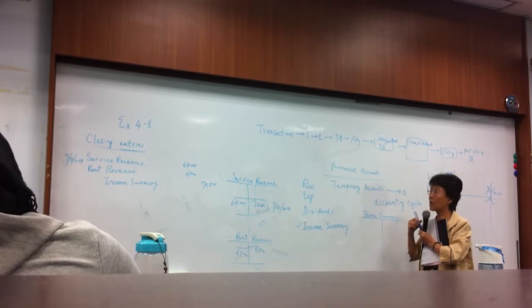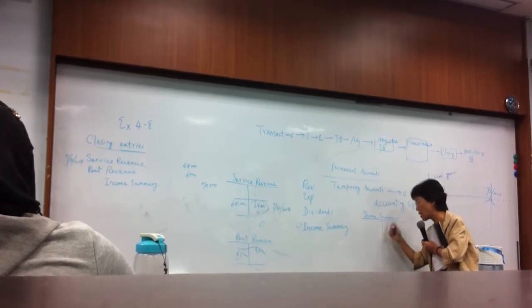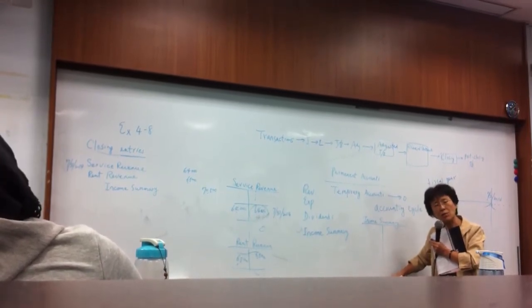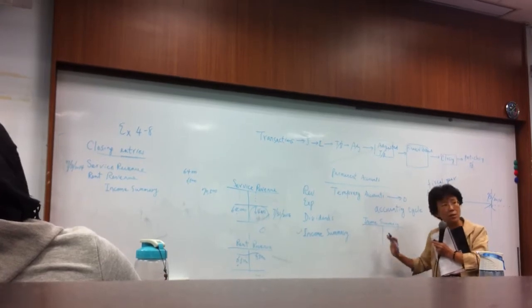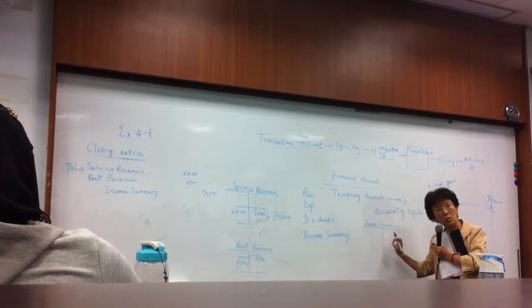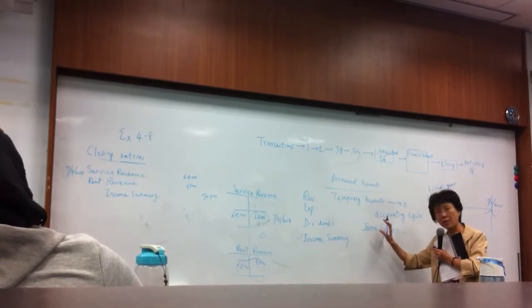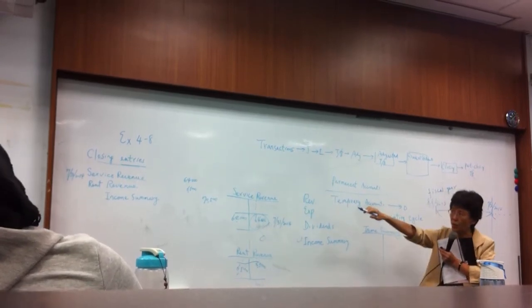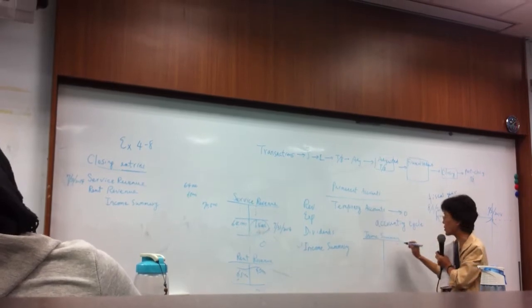And so you can see why do we name this account income summary? Because here they try to summarize everything about your net income here. So here comes all the revenues, right? This is a first entry. Kind of transfer all your revenues here.